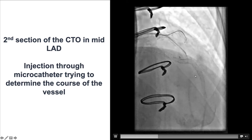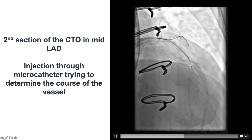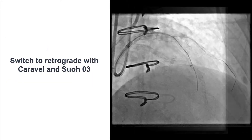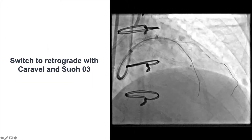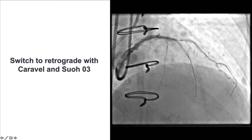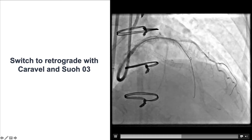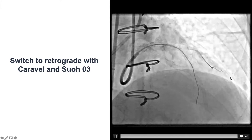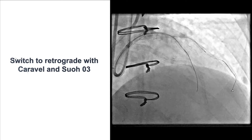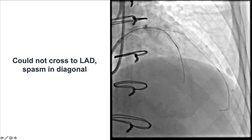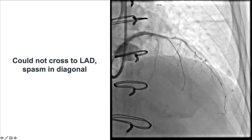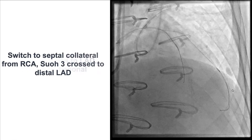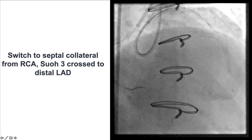As a result, we decided to switch to retrograde crossing. We tried retrograde through the epicardial collateral using a SUO-03 guide wire, but we were unable to cross and developed significant spasm in the collateral, so we abandoned that option.